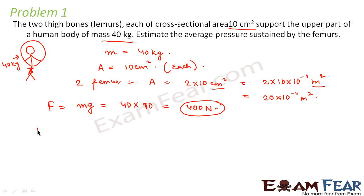Therefore, we have to calculate the average pressure. The pressure P is nothing but force per unit area. So force is 400 and area is 20 into 10 to the power minus 4. So this comes out to be 2 into 10 to the power 5 newton per meter square. So this could be the average pressure that can be sustained by the femurs.